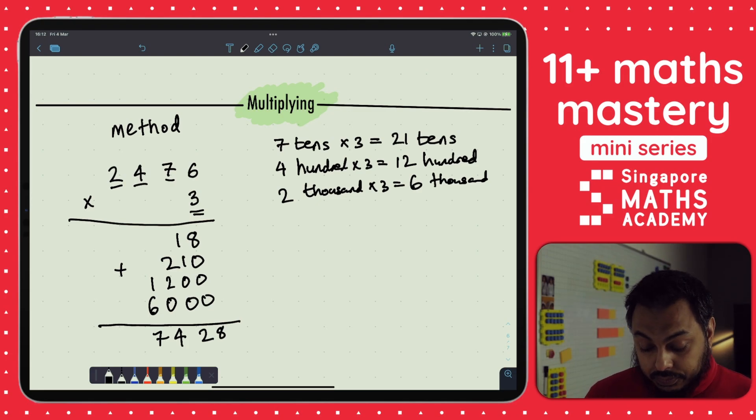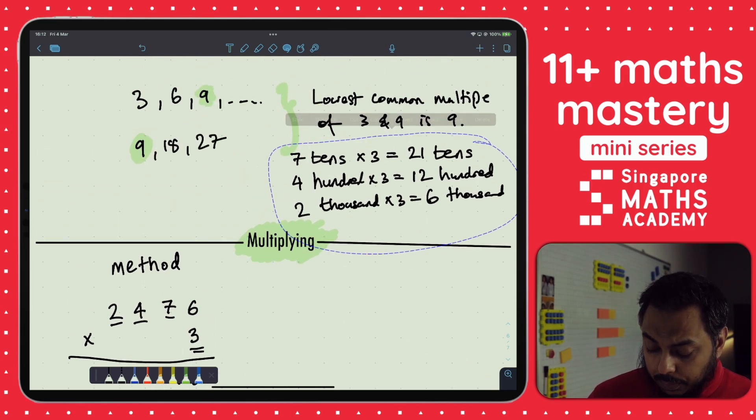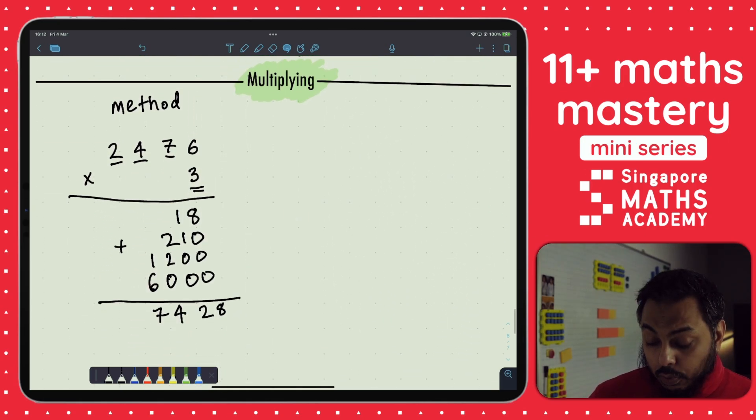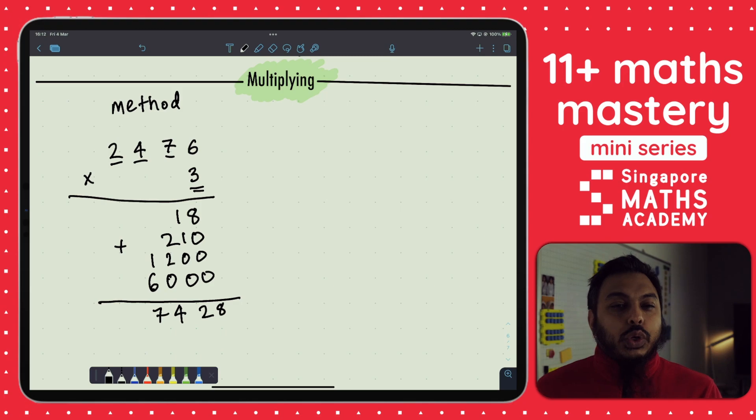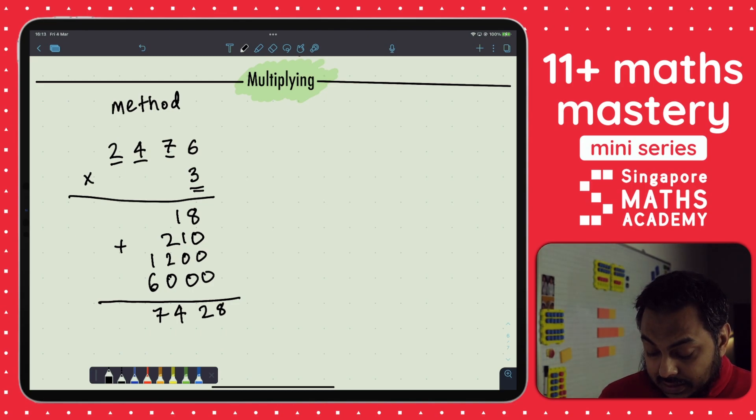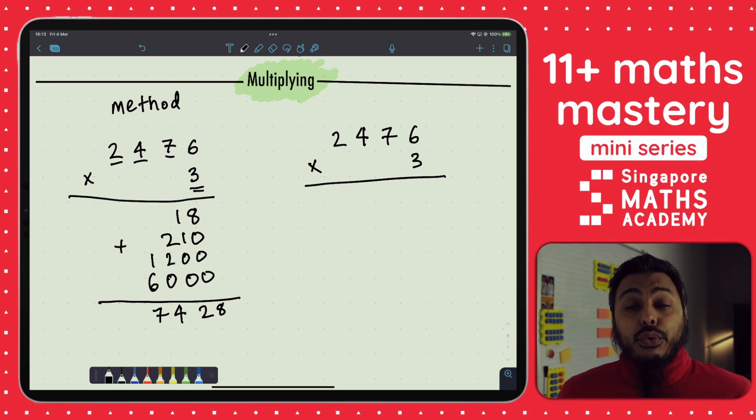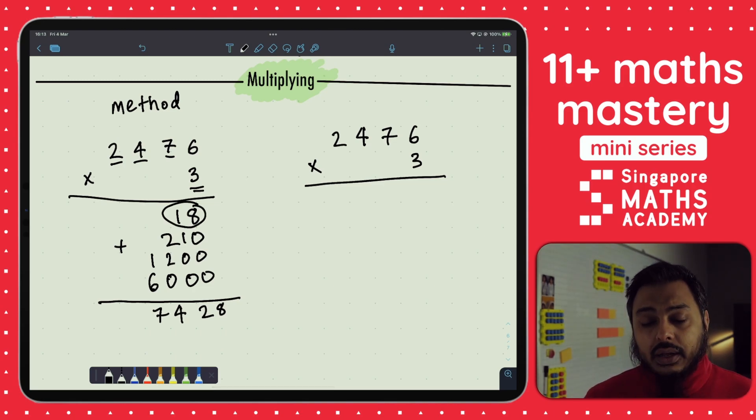So that's one way that we can use column multiplication in a slightly different way. We don't typically want to stay on that method. We can start with that first, but what we want our children to get onto, which is a more efficient way of calculating using column method, is the standard method that we all probably have learned and were taught in school ourselves, which is 2,476 times 3. But the way we want to go through it is so that our children understand. So what did we do here? We did 6 times 3 here, which is 18.